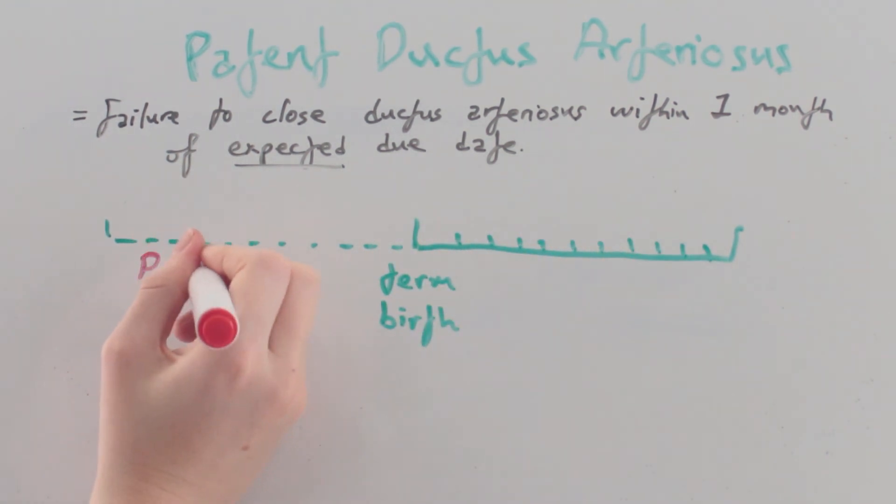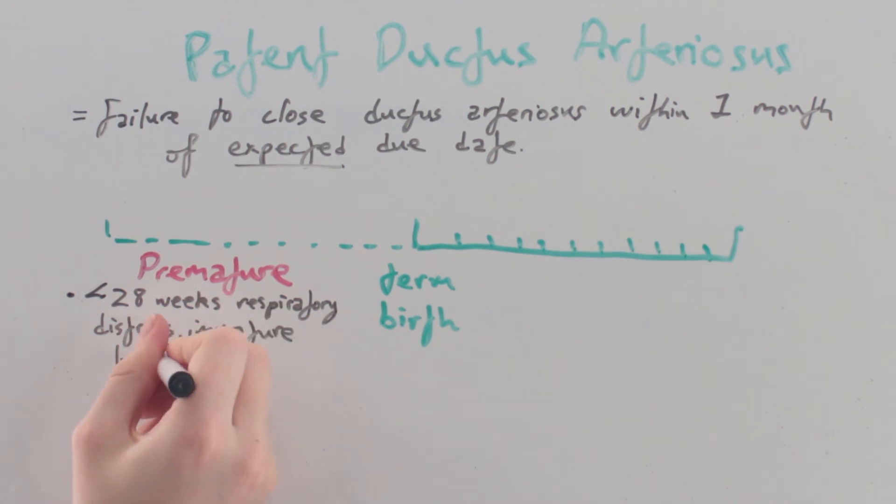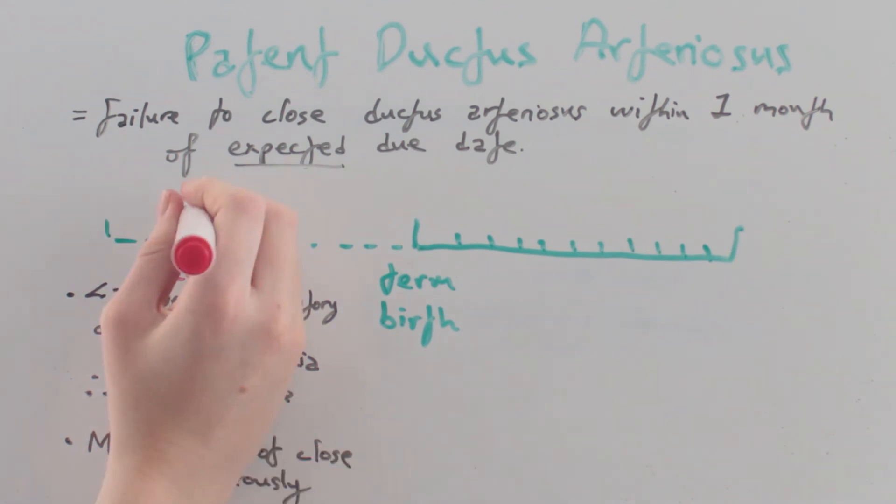The premature baby is at risk of PDA, especially those born before 28 weeks, as they are prone to respiratory distress due to immature lungs and resulting hypoxia. Over 50% of prem babies will have a PDA. This may or may not close spontaneously as the baby reaches term.